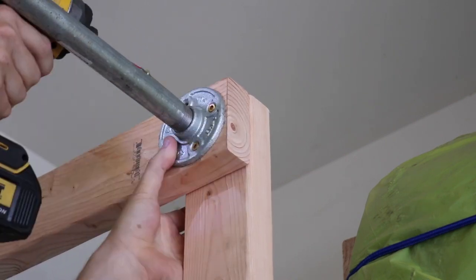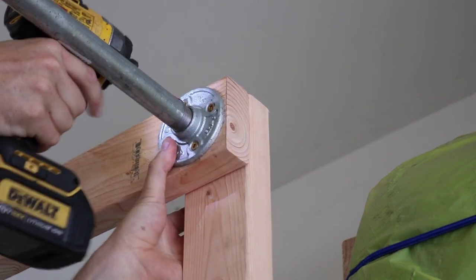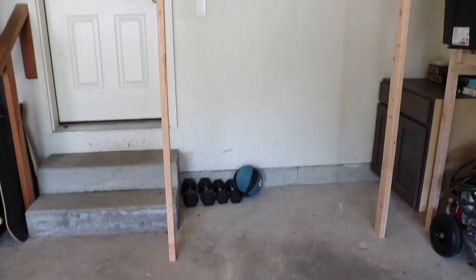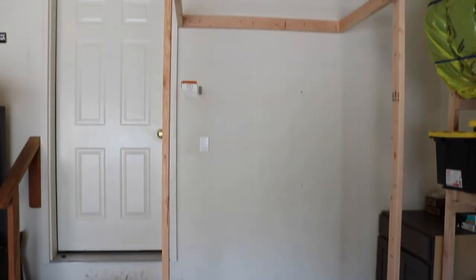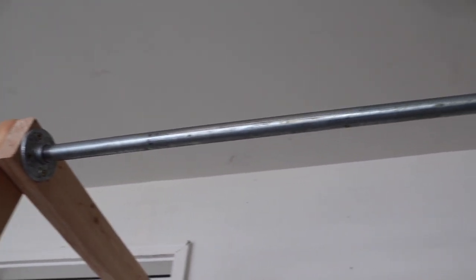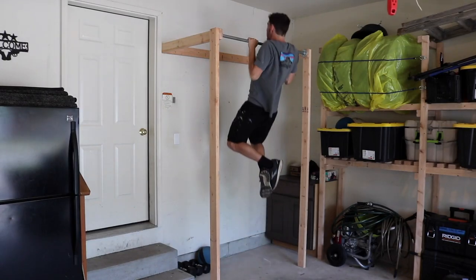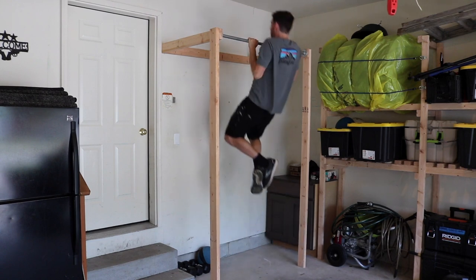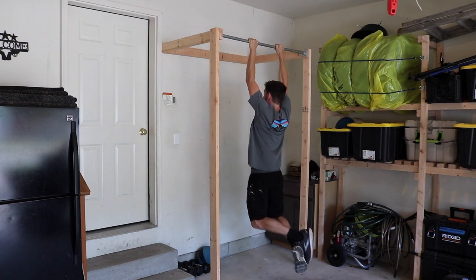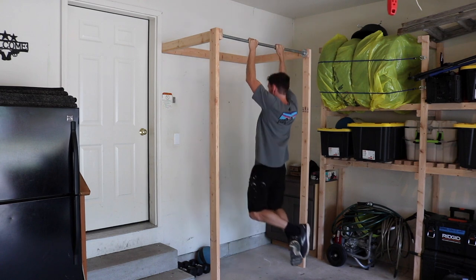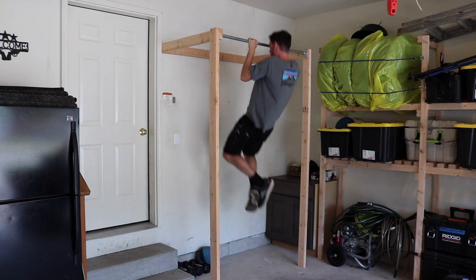And that's pretty much it. So that is how I built a super simple pull-up bar. It only cost me about $50. There's only three holes in the wall, so if you're in a rental, this is a good option. And it is super sturdy. So I hope this was helpful. Thank you for watching and I'll see you in the next video.